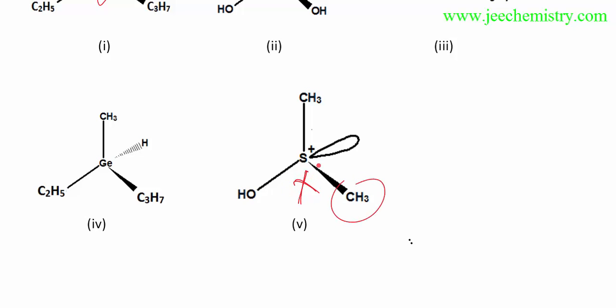One group is a lone pair not represented in the proper way. This is not chiral. But if the sulfur is like this: CH3, OH, C2H5 plus the lone pair, then four different groups - this is chiral.